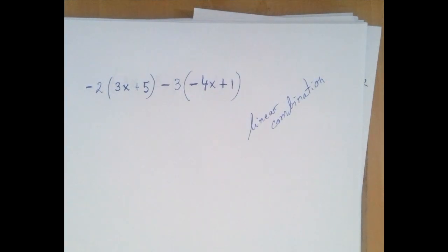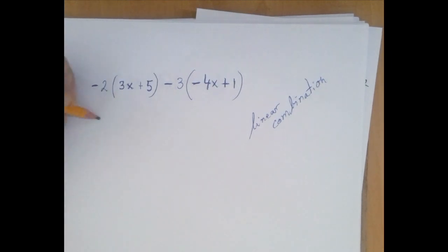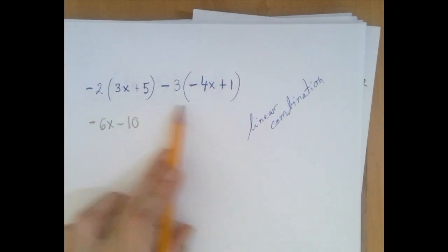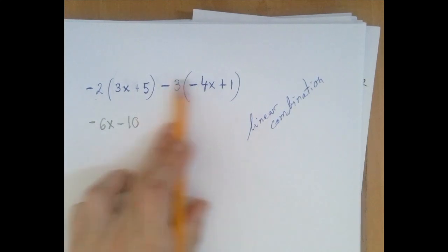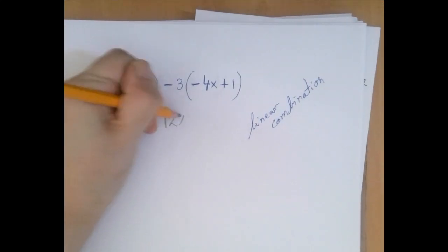This is a linear combination of the two algebraic expressions. So we're going to distribute: negative 2 times 3x is negative 6x, negative 2 times plus 5 is negative 10, negative 3 times negative 4x is plus 12x. So when we say plus 12x, we mean adding it.